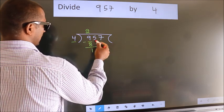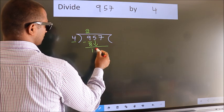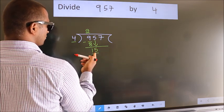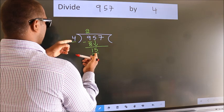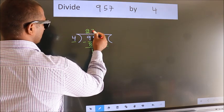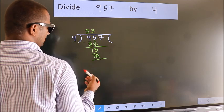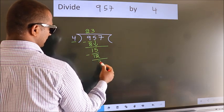After this, bring down the beside number. So, 5 down. So, 15. A number close to 15 in the 4 table is 4 threes, 12. Now, we subtract. We get 3.